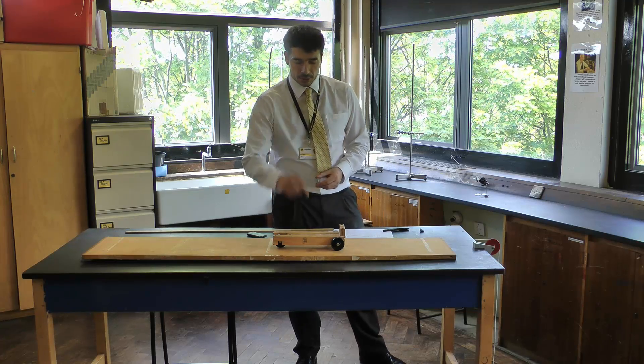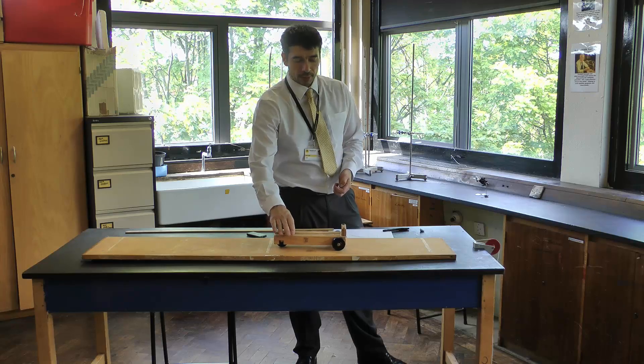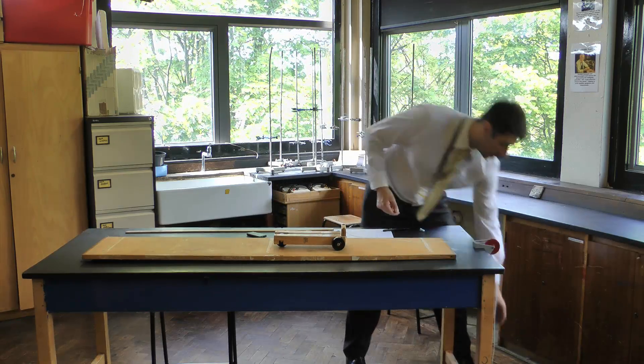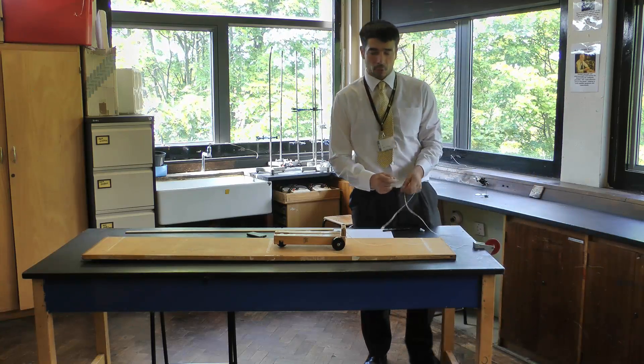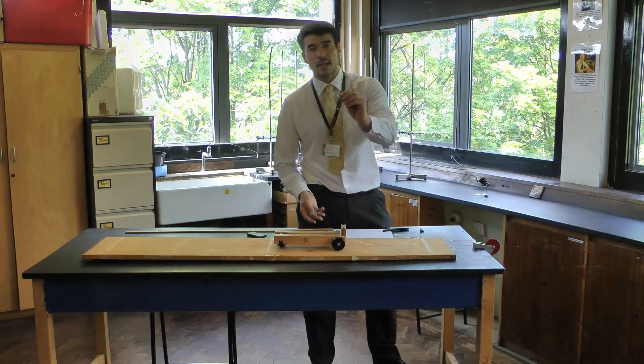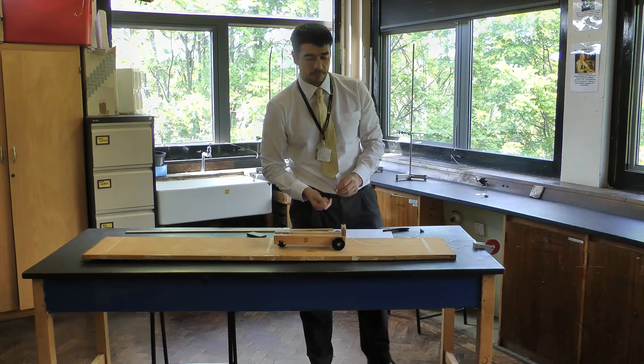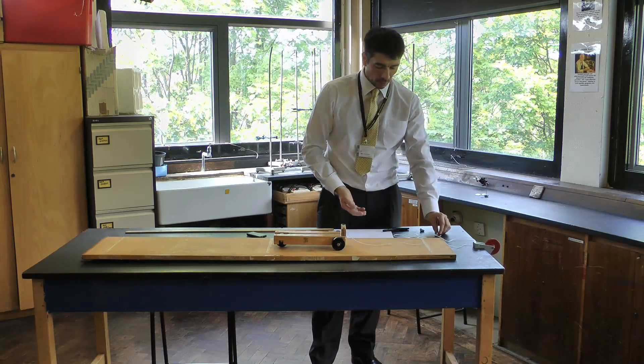There's several bits of equipment you need. You need a nice smooth rolling dynamics trolley, some string, a pulley, a set of very small masses - a 10 gram hanger with maybe four more 10 gram slotted masses to go with it.